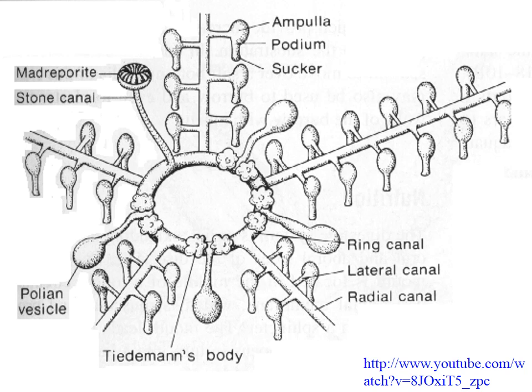The polian vesicle is essentially a large muscular water bag that can squeeze to rapidly add water to the system or expand to remove it, depending on how much volume is needed at any given time — functioning like a hydraulic sump. The Tiedemann's bodies are a filtering organ that removes particulate matter from the water within the water vascular system so it doesn't get clogged.